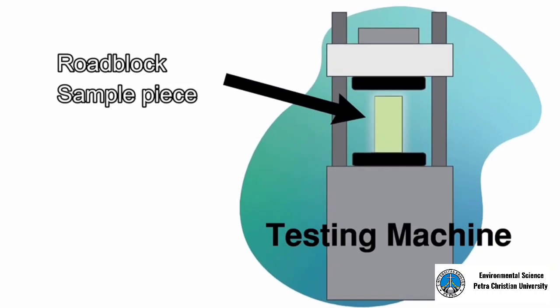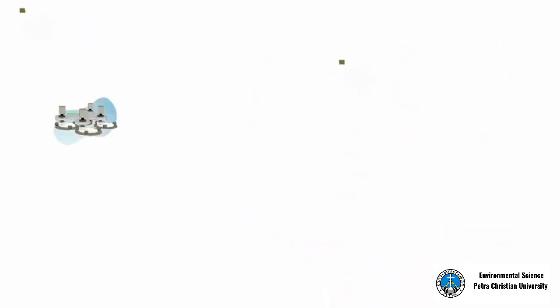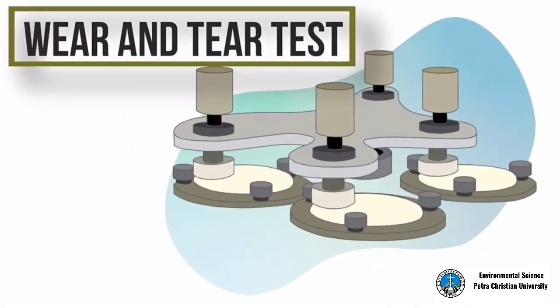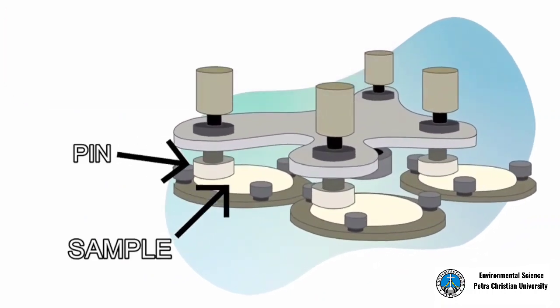The wear and tear resistance test is to measure the durability of the glow-in-the-dark concrete over time. In a pin-on-disk wear tester, the pin is loaded against a flat rotating disk such that a circular wear path is described by the machine. Then the sample is carefully cleaned and weighed to be compared to the control sample to describe the durability of the glow-in-the-dark concrete itself.